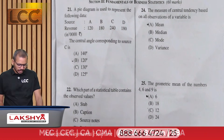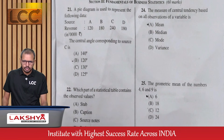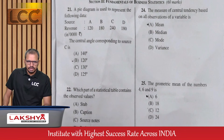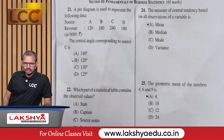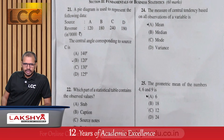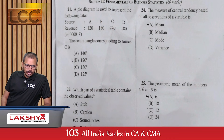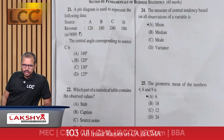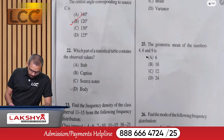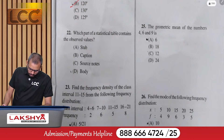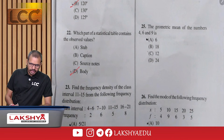Question 21 (Statistics): A pie diagram represents sources and revenues A, B, C, D with values 120, 180, 240, and 180. Find the central angle for source C — option B. Question 22: Which part of a statistical table contains the observed values — option D.